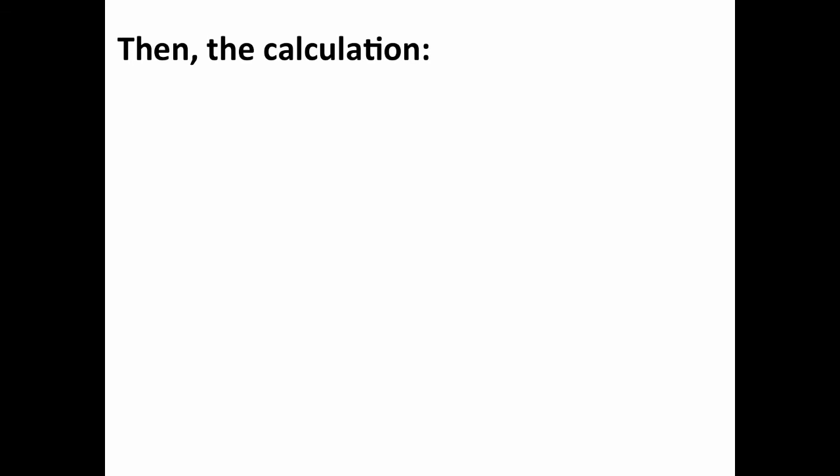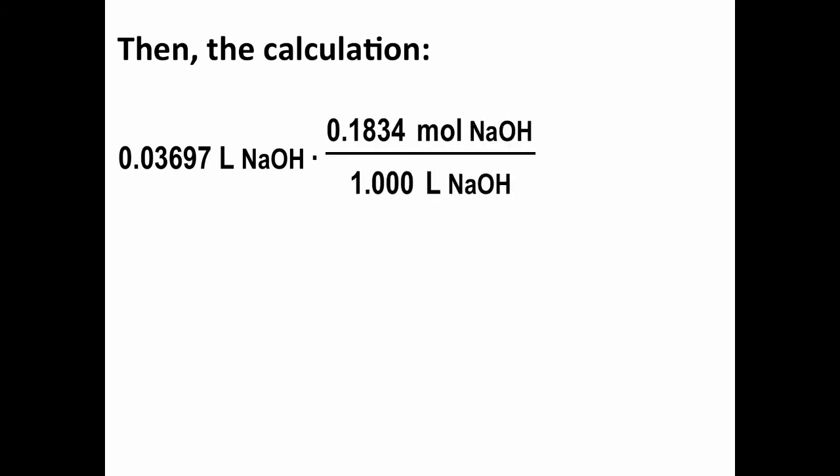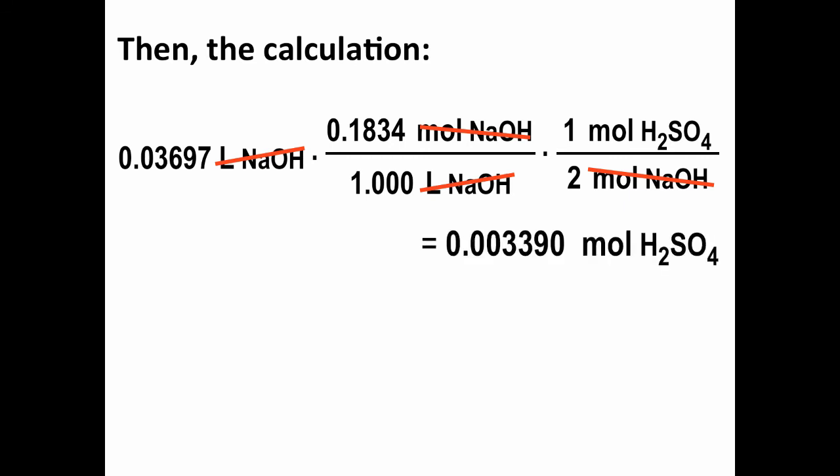Then we move on to the calculation. We have 36.97 milliliters of sodium hydroxide solution, or 0.03697 liters of sodium hydroxide solution. We've converted to liters because we use the concentration of the sodium hydroxide solution, 0.1834 moles per one liter of the solution, to convert from liters into moles. And then, since there are two moles of NaOH required to titrate or react with one mole of sulfuric acid, a second conversion allows us to calculate the number of moles of sulfuric acid in our sample. And that turns out to be 0.003390 moles of H2SO4.